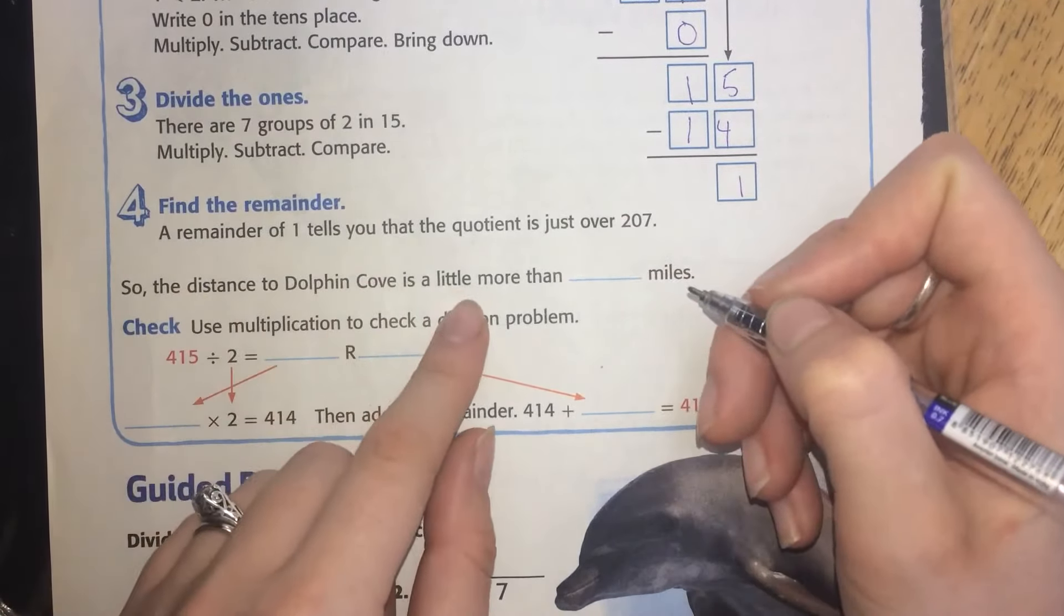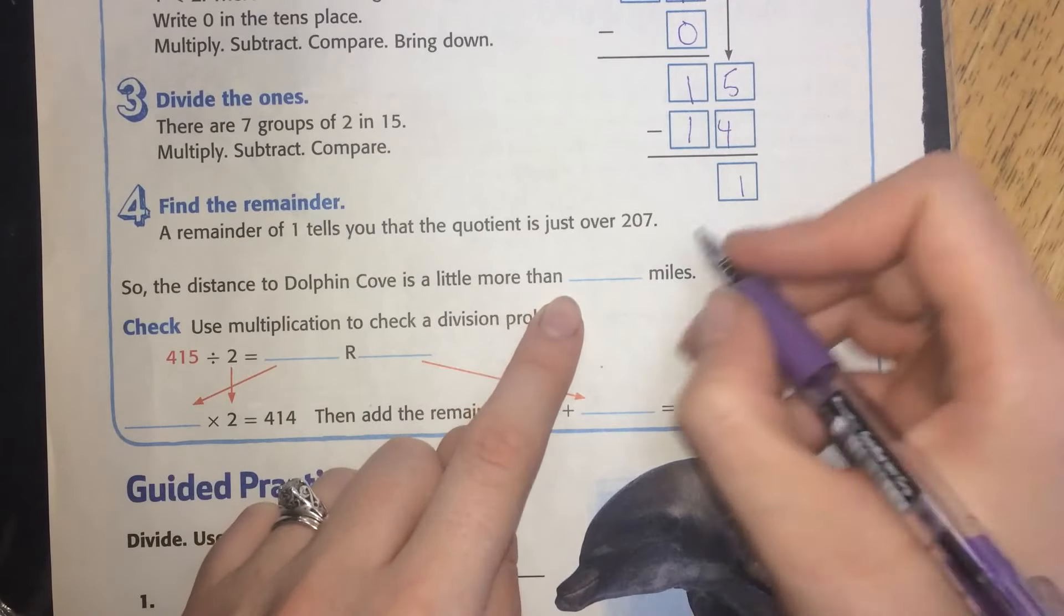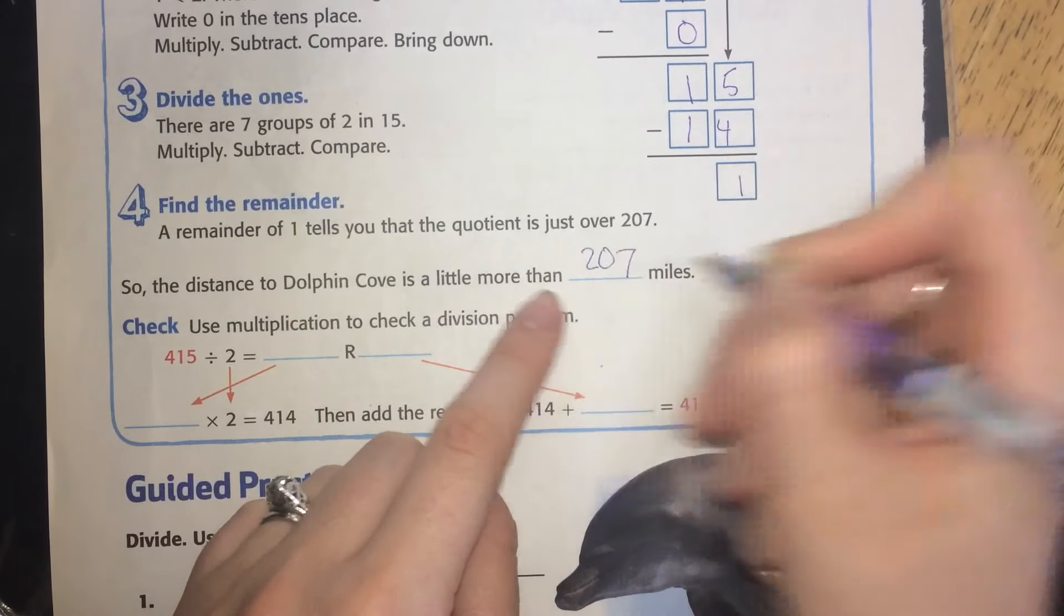So the distance to Dolphin Cove is a little more than 207 miles.